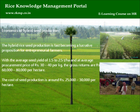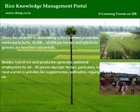Economics of Hybrid Seed Production: hybrid rice seed production is fast becoming a lucrative proposition for entrepreneurial farmers. With an average seed yield of 1.5 to 2.5 tonnes per hectare at an average procurement price of Rs. 30 to 40 per kg, the gross returns are Rs. 60,000 to Rs. 80,000 per hectare. The cost of seed production is around Rs. 25,000 to Rs. 30,000 per hectare; hence the net profit works out to Rs. 35,000 to Rs. 50,000 per hectare, and hybrid rice growers are benefited substantially. Besides, hybrid rice seed production generates additional employment for 60 to 80 person-days per hectare, particularly for rural women in activities like supplementary pollination and roguing.